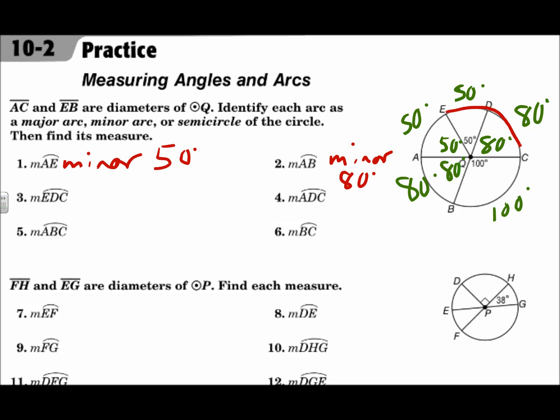Arc EDC, just because it's named with three letters, doesn't mean it's major. This is still less than halfway around the circle, so it's a minor arc, and it uses the 50 and the 80, put them together to get 130 degrees. You can do arc ADC, just like angle addition or segment addition. Arc ADC, that's halfway around exactly. That's going to be a semicircle, and it adds 50, 50, and 80, which is 180. A semicircle is always 180. So this is a semicircle, and it's 180 degrees.